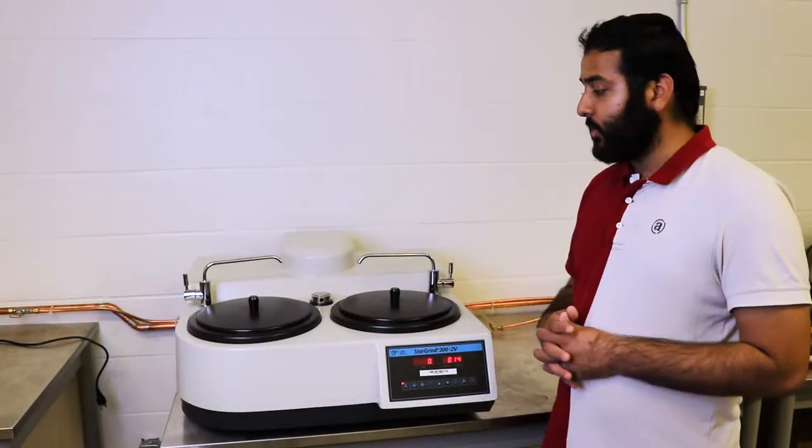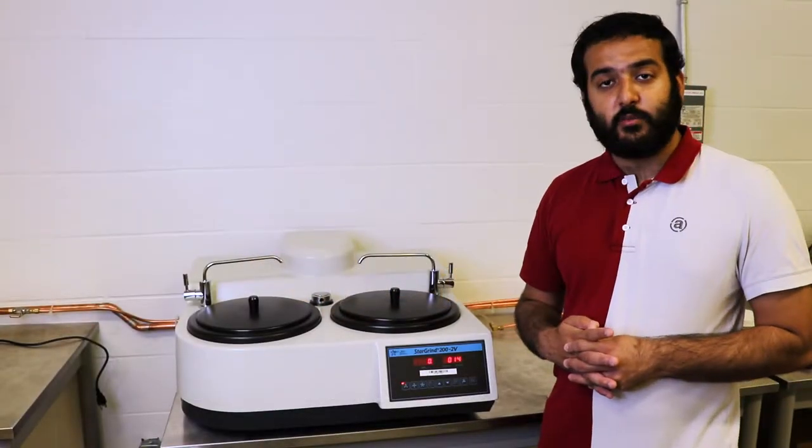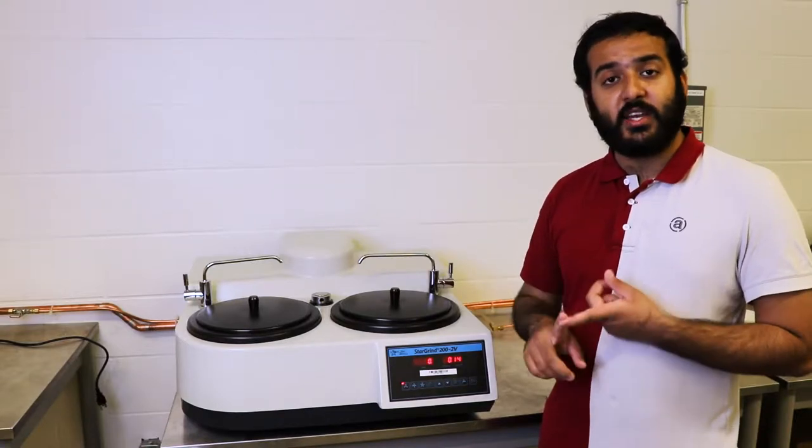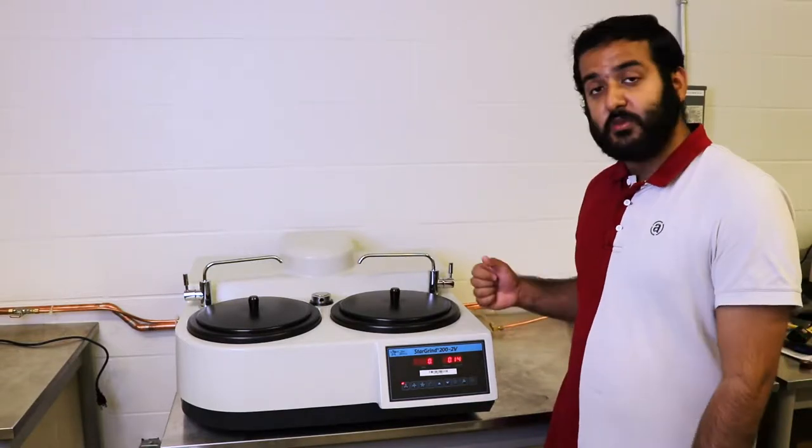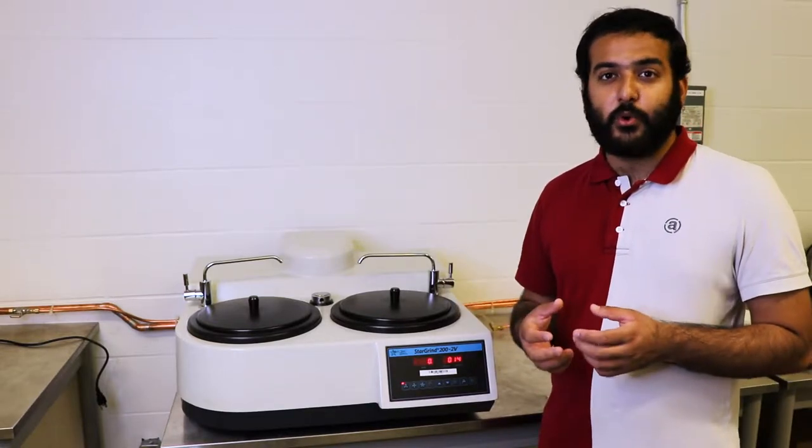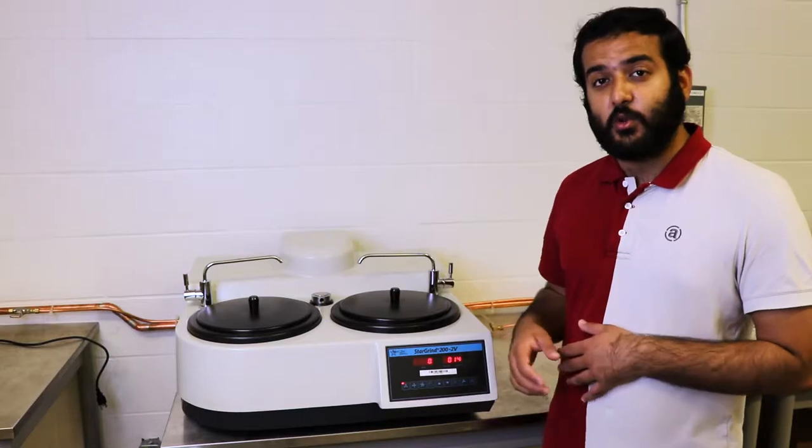Hey guys, today we're going to be showing you the polishing and grinding machine. Once you get your sample from the hot forming machine, you need to grind it and polish it. This machine does both of those. Grinding uses grit paper, or you can call it sandpaper, something that looks like this.